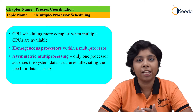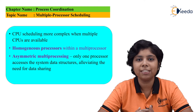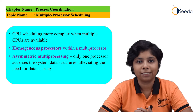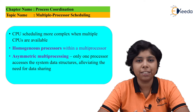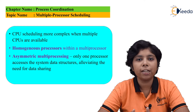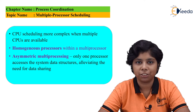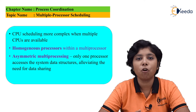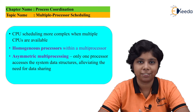With the help of this approach, we can simplify the scheduling act. Asymmetric multiprocessing is very simple because it uses only one processor which accesses the system data structures, thus reducing the need for data sharing among the processors.